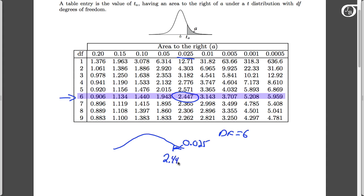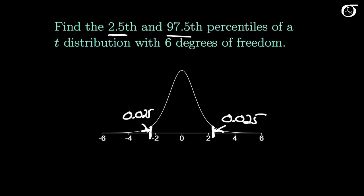Note that the t-table does not give any negative values of t, because the t-distribution is symmetric about 0. We can easily find values in the left tail by relying on that symmetry argument. For example, if we want the value of t such that the area to the left is 0.025, we can say: by symmetry about 0, that value must be minus 2.447. So using the t-table, the 97.5th percentile is 2.447 and the 2.5th percentile is minus 2.447.